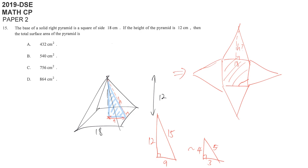So, now we know this is 15, and then we try to get the area of these 5 surfaces. The total area should equal to a square with 18 being the side length, and then plus 4 times this triangle, which is 18 and the height is 15.